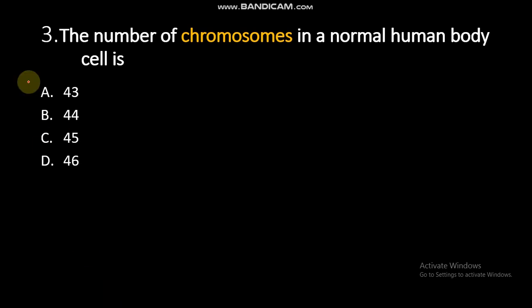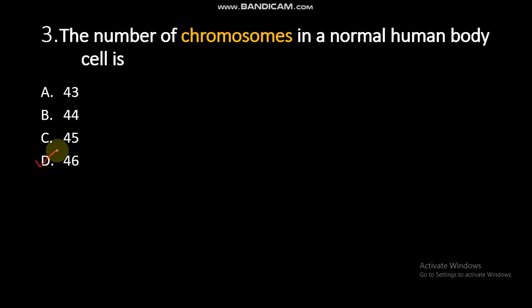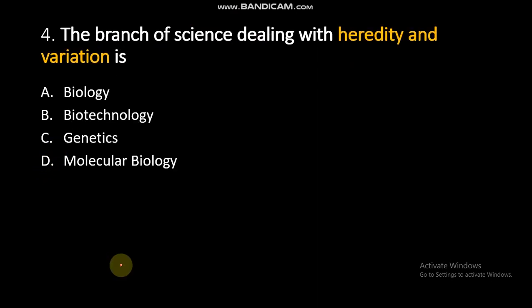The number of chromosomes in a normal human body cell is 46. So, the answer is D.